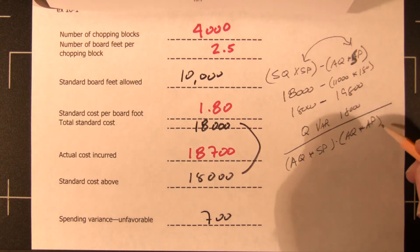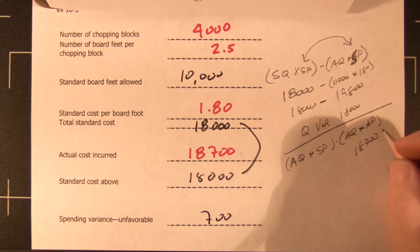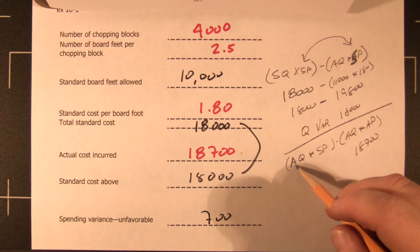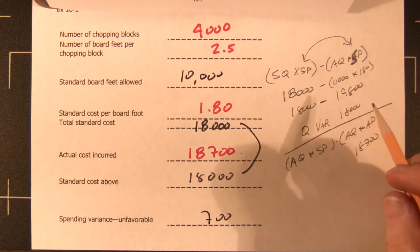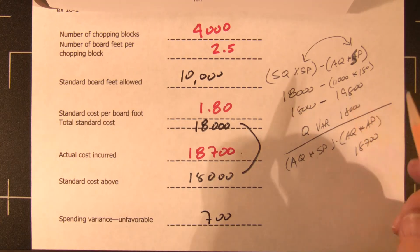So the actual quantity times the actual price is this, and the actual quantity times the standard price is here. So we have our actual quantity of $11,000 times the standard price. We got that from here.